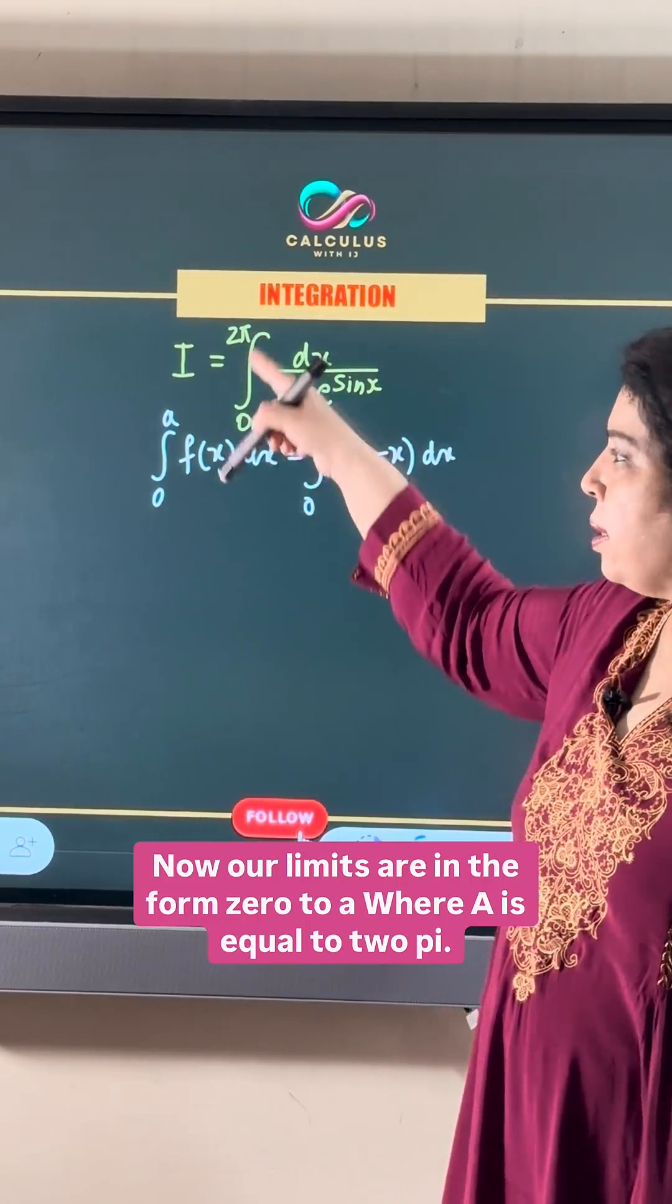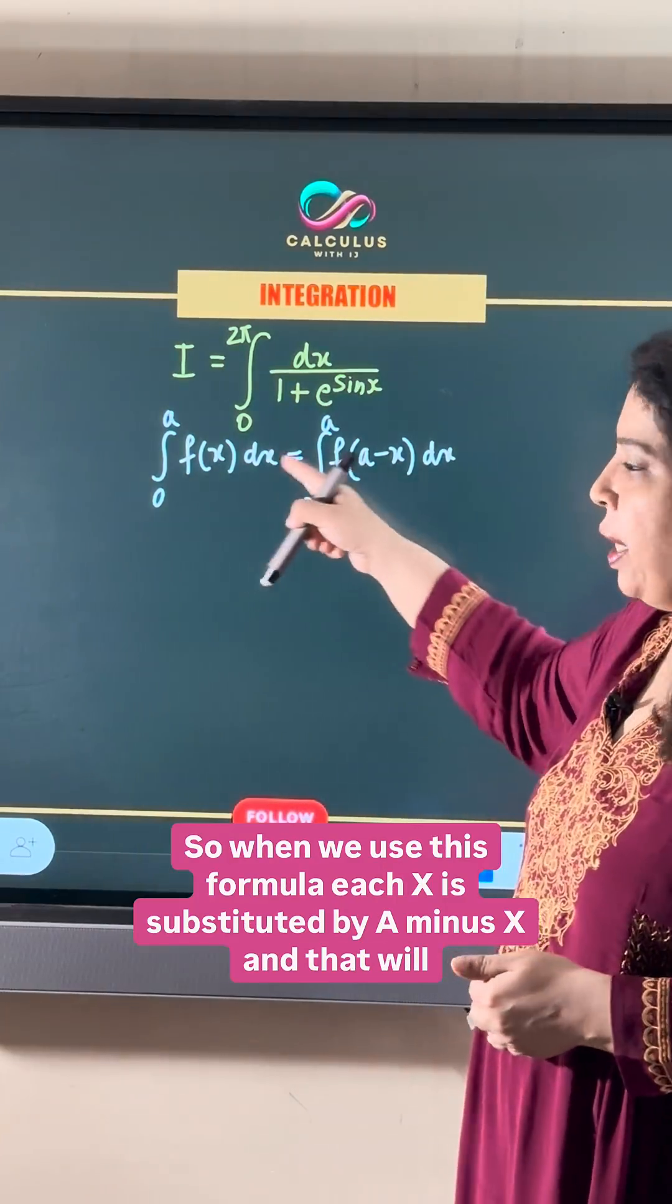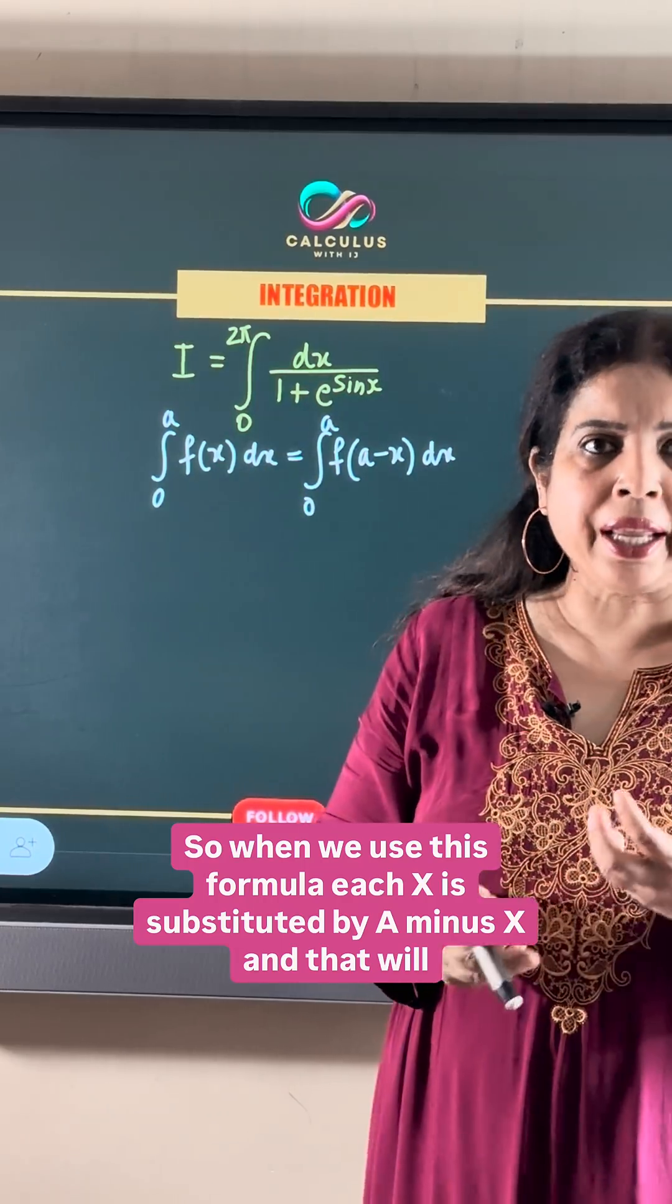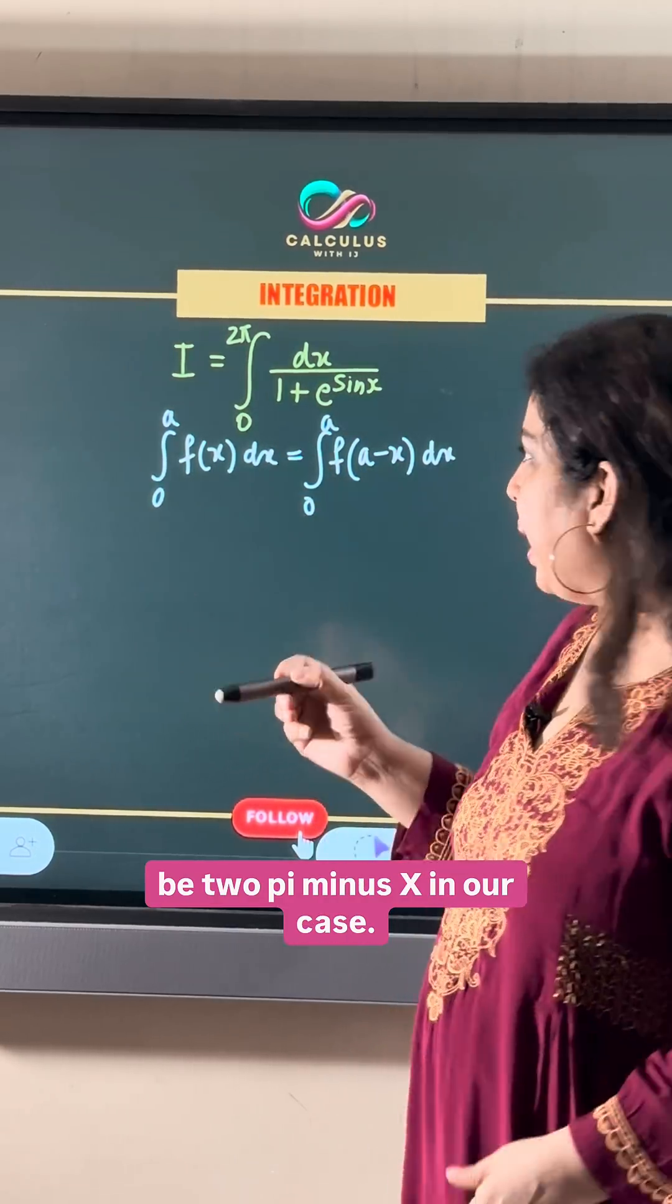Now our limits are in the form 0 to a where a is equal to 2π. So when we use this formula, each x is substituted by a minus x, and that will be 2π minus x in our case.